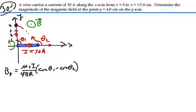So theta one is actually 90 degrees, and cosine of theta one then will be zero.